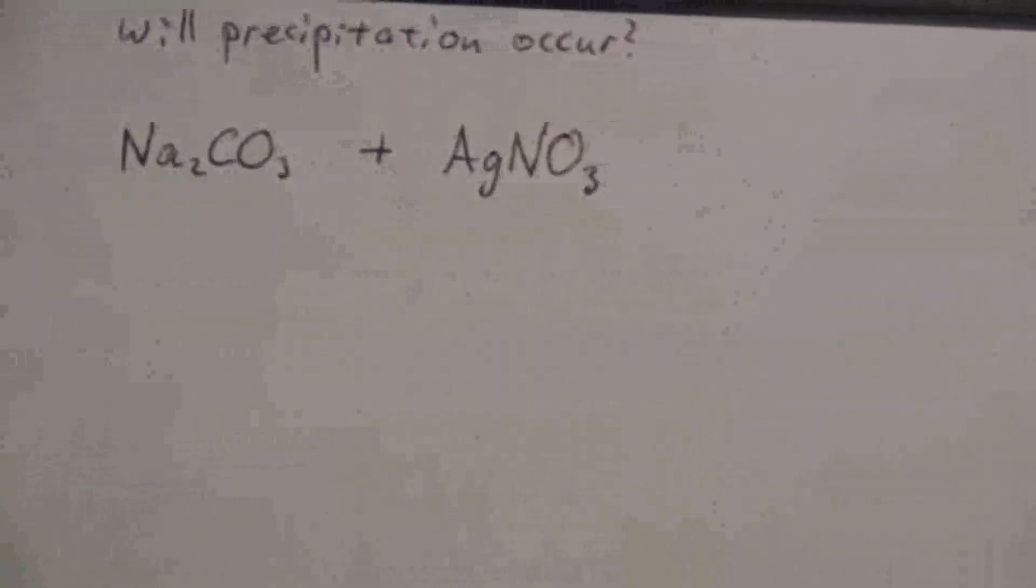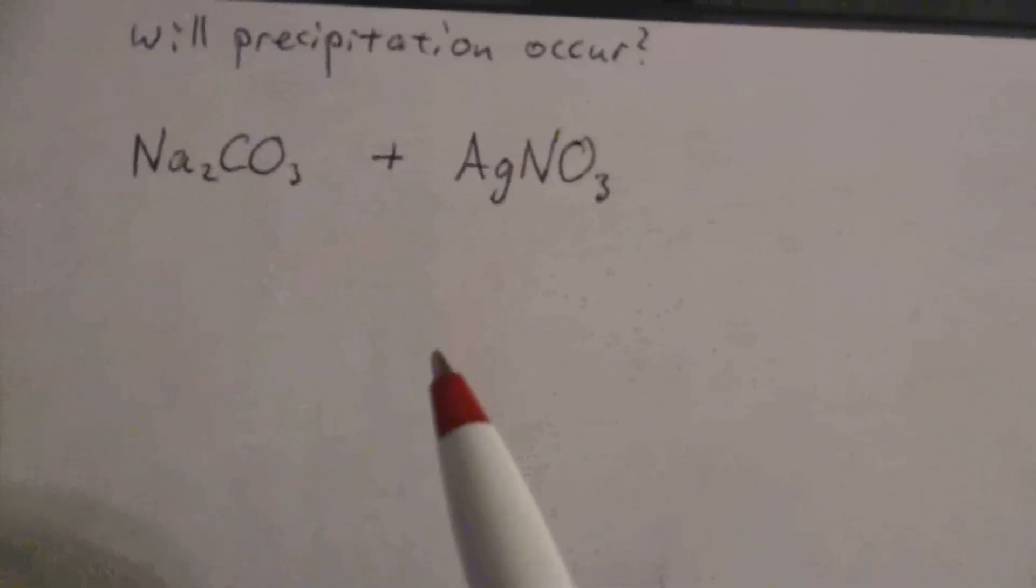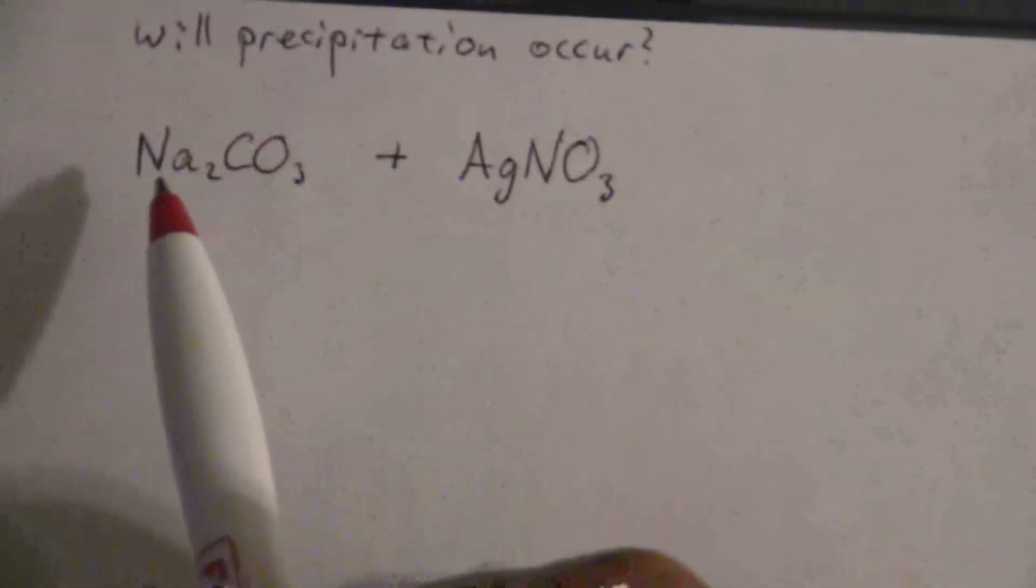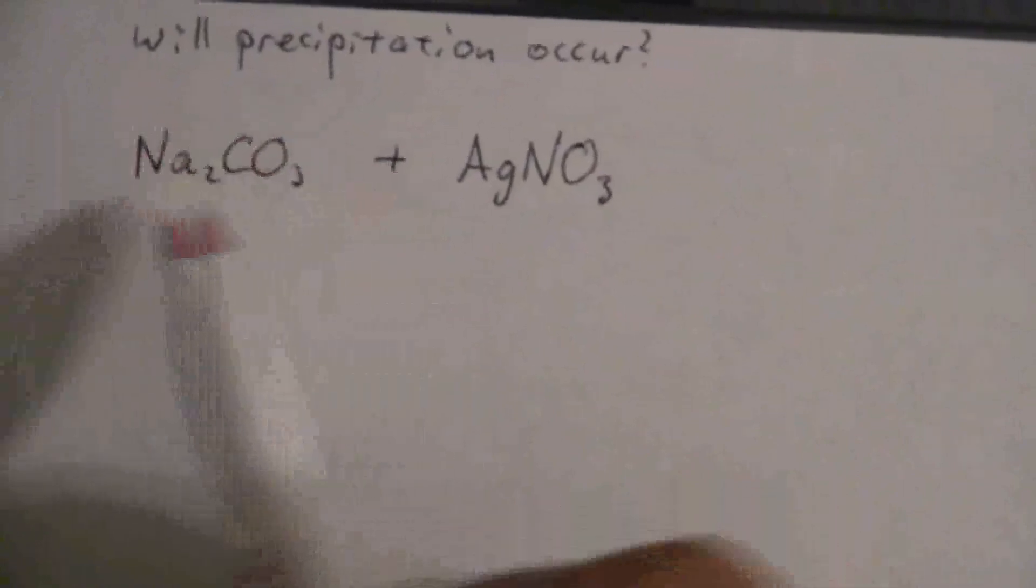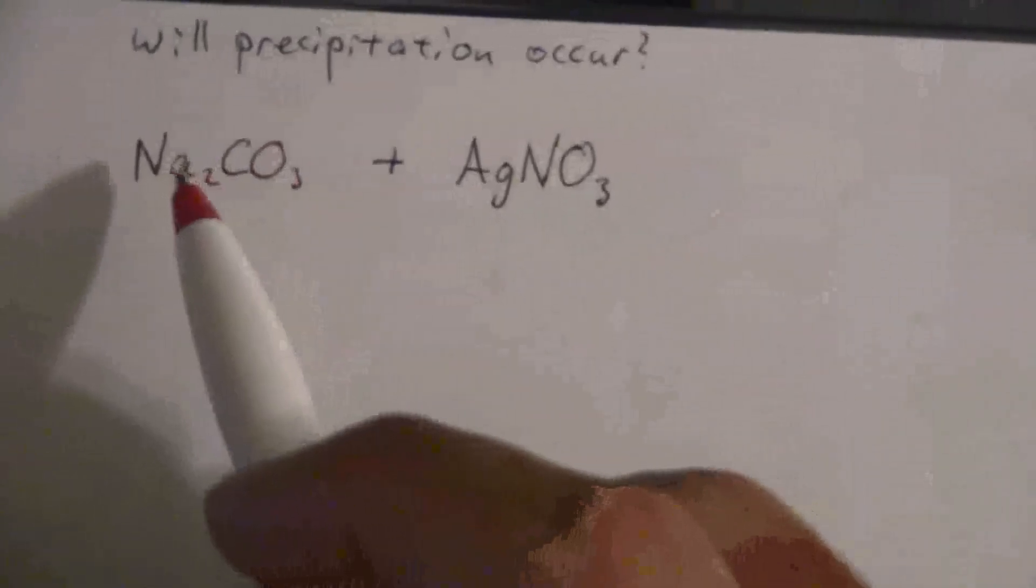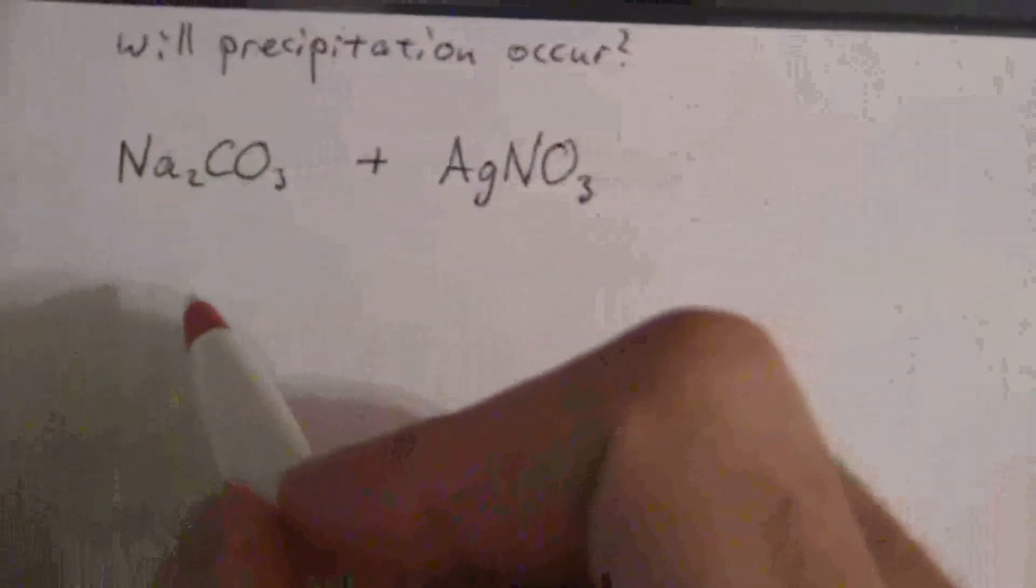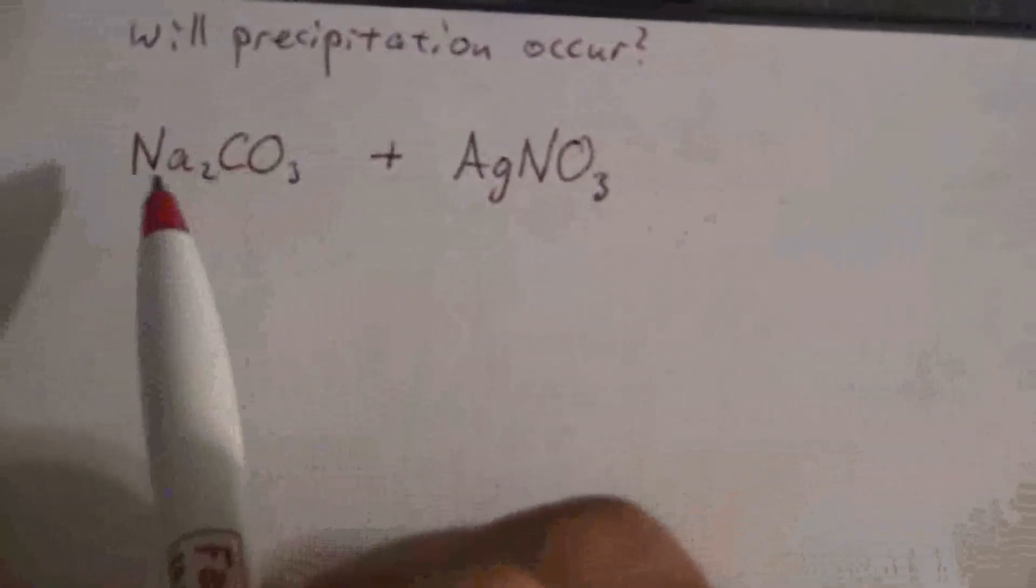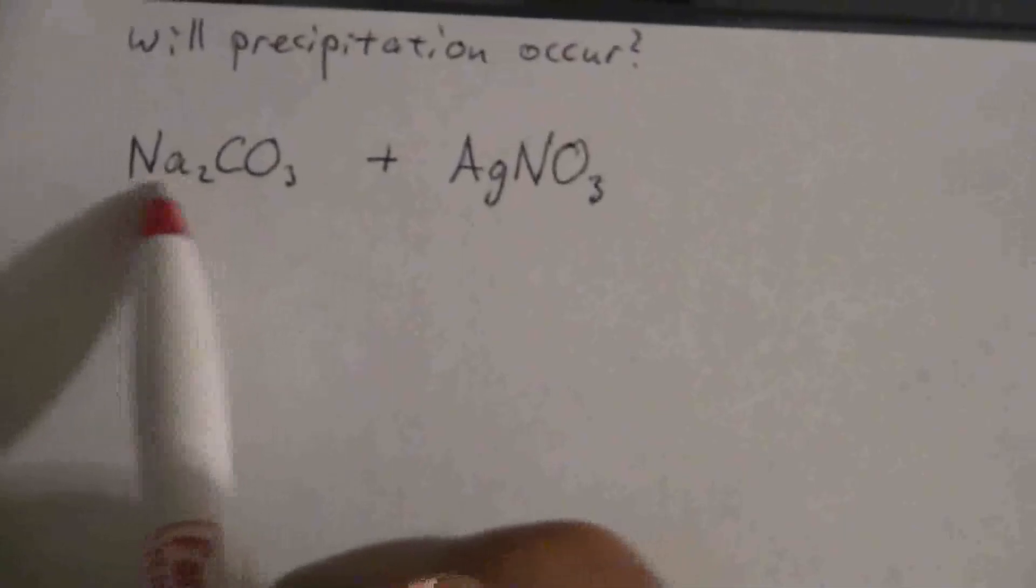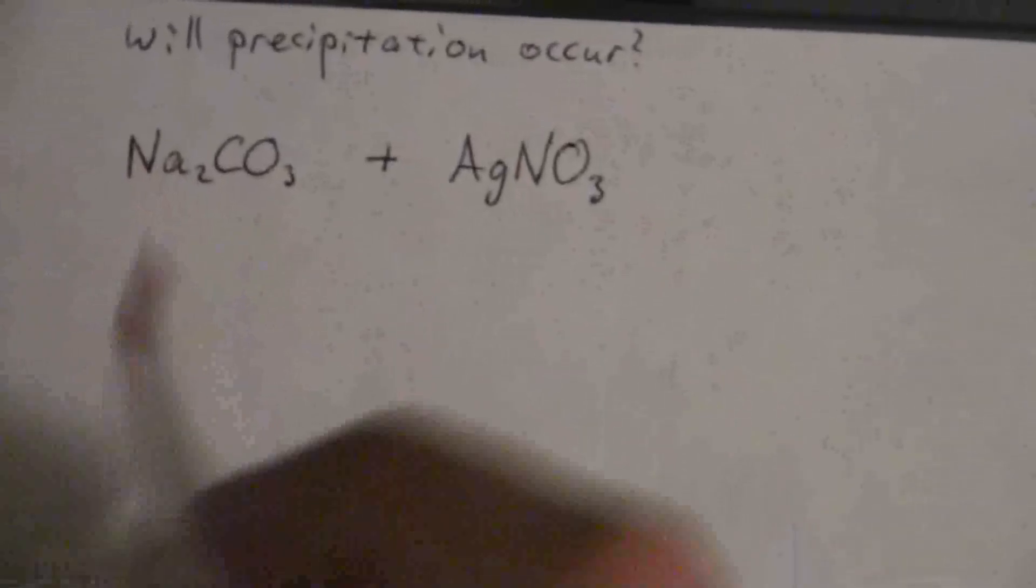In order to answer this kind of question we need to look at each of these solutions and say what is actually in the solution. So when we put a solution made from this solid sodium carbonate dissolved in water, since it's a solution we know it's going to be soluble but we can verify that with the solubility tables or solubility rules. And seeing that sodium there, all sodium salts are soluble. So we know that's going to be soluble.